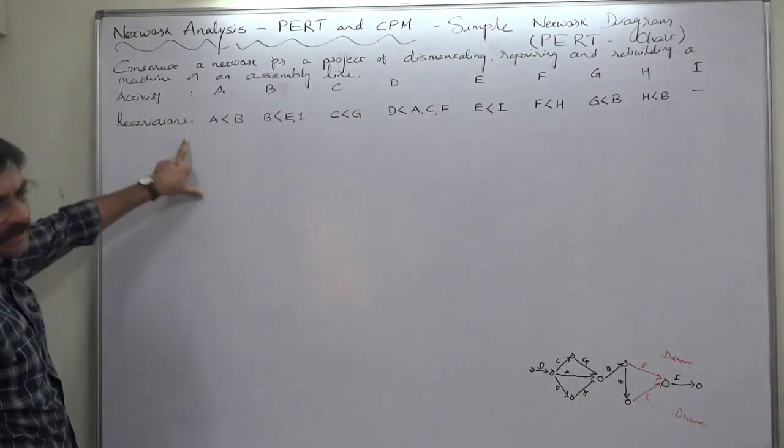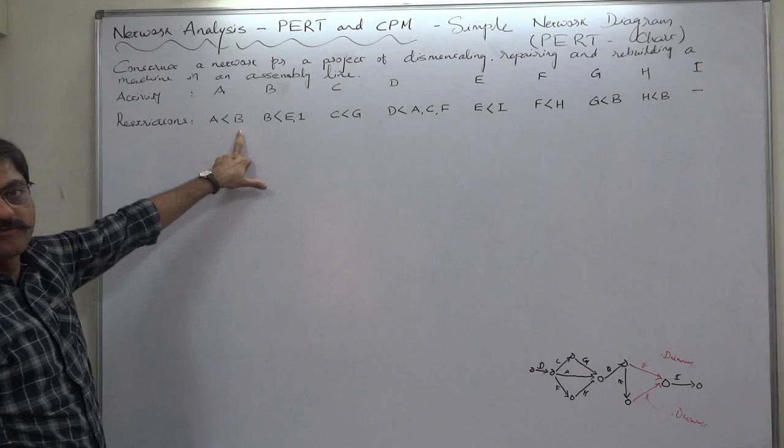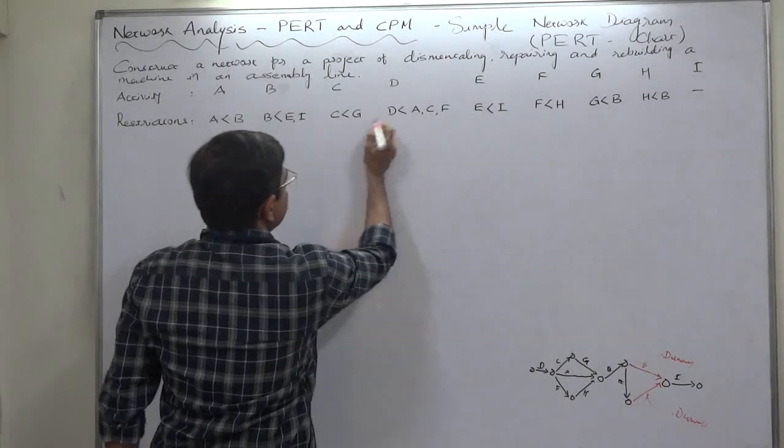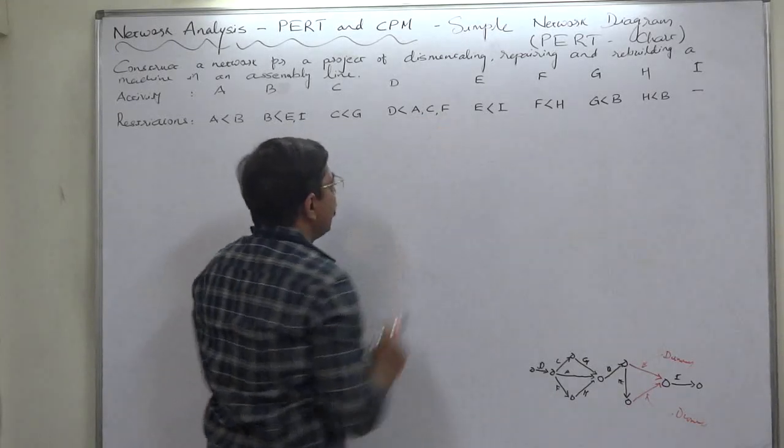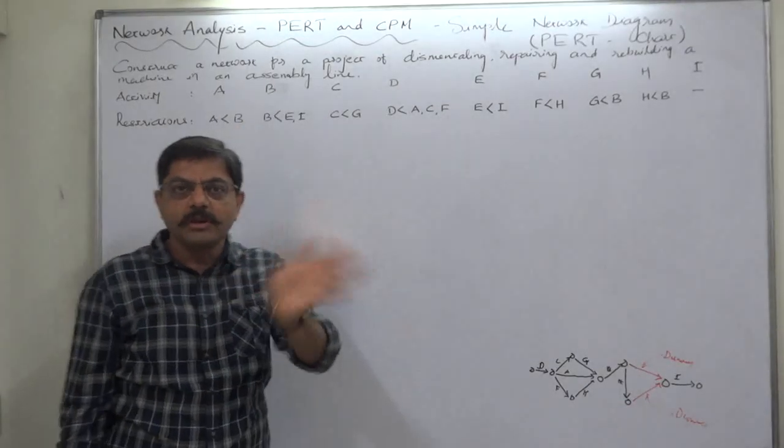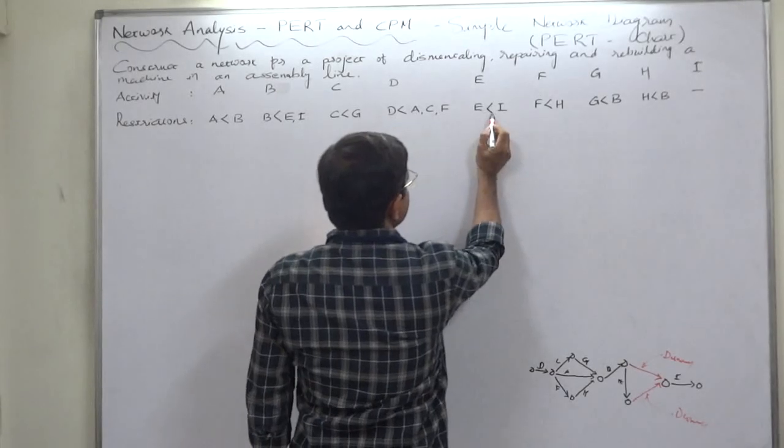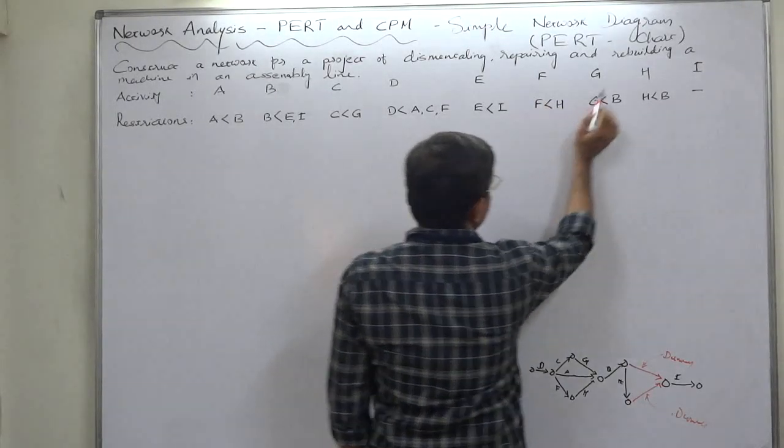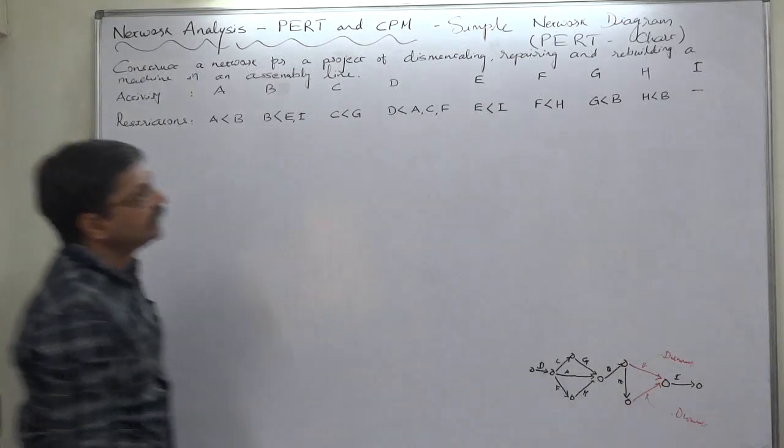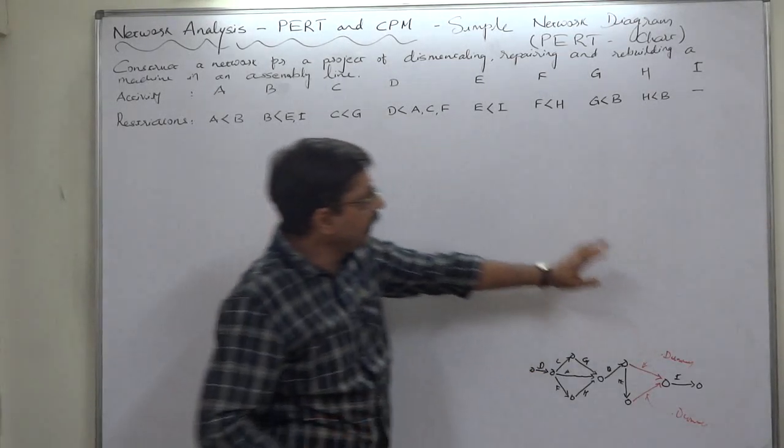Activity and restrictions. Activity A is predecessor of B. B is predecessor of E and I. C is predecessor of G. D is predecessor of A, C, and F. E is predecessor of I. F is predecessor of H. G is predecessor of B. H is predecessor of B. And I doesn't become predecessor of anyone, that means E is the last activity of the project.